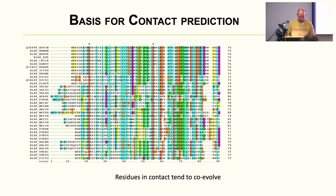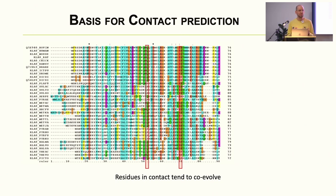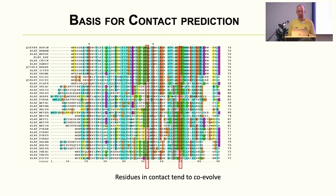What started working some 10 years ago is the idea of using evolutionary information — actually an idea from the mid-90s. Since structure is conserved in evolution, there are constraints: if two residues are in contact, they co-evolve. If a big amino acid becomes small, the neighboring one has to become big to fill the gap. So there should be co-evolutionary signals. This was proposed by a couple of groups in the mid-90s but didn't really work well enough for structure prediction.